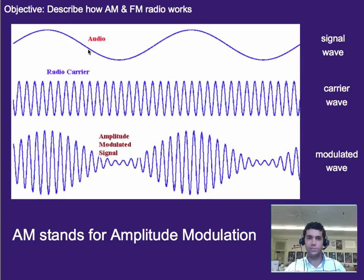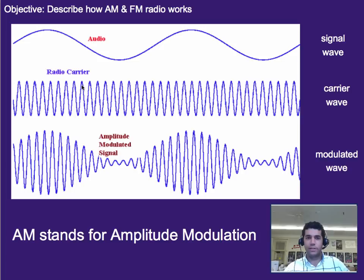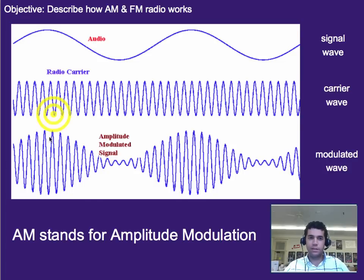So here we have the original audio signal — a simple sine wave — and we have the original carrier, which is the radio's carrier frequency. This might be 105.3, 94.9, 88.5, or whatever frequency you're broadcasting on. To combine them, we keep the carrier wave's frequency the same and instead change its amplitude. So instead of a consistent amplitude or signal strength, we have that changing, and we encode the audio into that changing amplitude.